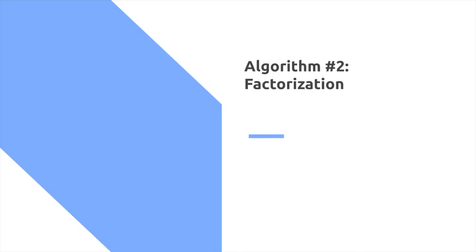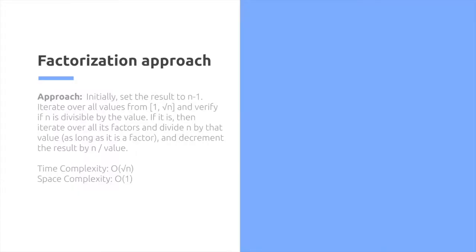The next approach we're going to cover is factorization. This vastly improves the complexity. We initially set the result to n. Iterate over all values from 1 to root n, and verify if n is divisible by that value. If it is, then iterate over all its factors and divide n by that value, so long as it is a factor, and decrement the result by n divided by value. We'll get a time complexity of root n, and space of O1.